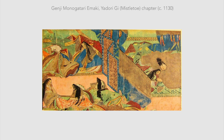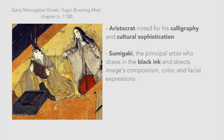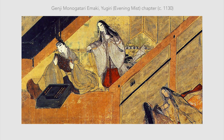The Genji Monogatari Maki, an example of onae, would have been an ambitious project completed by five teams. Each team included an aristocrat noted for his calligraphy and cultural sophistication, the principal artist called sumigaki — the painter who draws in the black ink — and artists who specialized in the application of traditional pigments. It is suspected that all 54 chapters of Genji Monogatari were illustrated, with one to three paintings per chapter, in a set of ten scrolls. Today only 20 pictures survive.